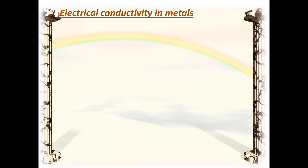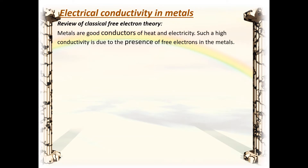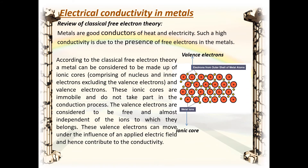First we will consider electrical conductivity in metals based on classical theory. We know that metals are good conductors of heat and electricity; such high conductivity is due to the presence of free electrons. According to classical free electron theory, a metal can be considered to be made up of ionic cores, which consist of the nucleus and inner electrons excluding the valence electrons. The ionic cores, marked here, are obtained by removal of the valence electrons from the neutral atom.